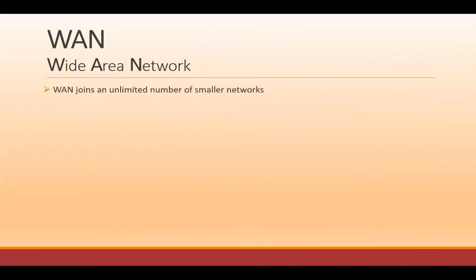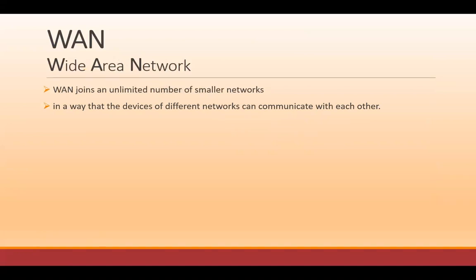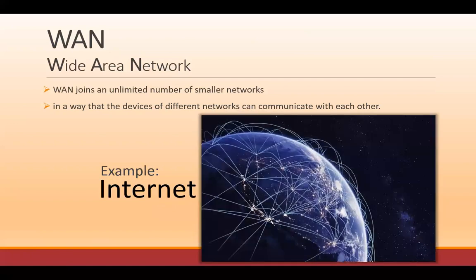Wide area network. A WAN joins an unlimited number of smaller networks in a way that the devices of different networks can communicate with each other. That sounds very familiar — the example is the internet. Wide area network — that's the internet. So when you have a piece of equipment that has a port labeled WAN, that's where you plug in, probably going to plug into a modem which is connected to the internet, bringing the internet to the building.